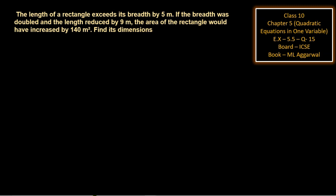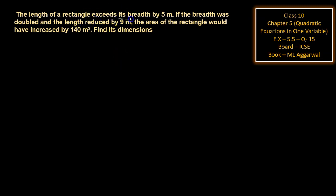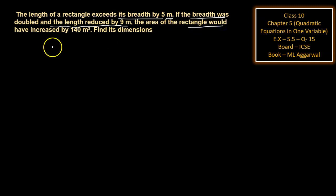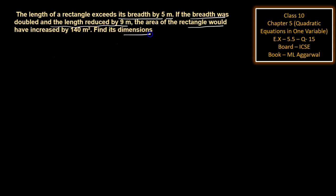Today's question is: The length of a rectangle exceeds its breadth by 5 meters. If the breadth was doubled and the length reduced by 9 meters, the area of the rectangle would have increased by 140 square meters. Find its dimensions.